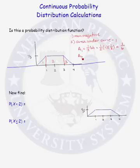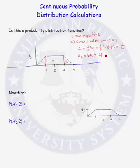Region 2 is a rectangle. The area of a rectangle is base times height. The length of the base is 2 and the height is 1/3, so we have that the area of region 2 is equal to 2/3.